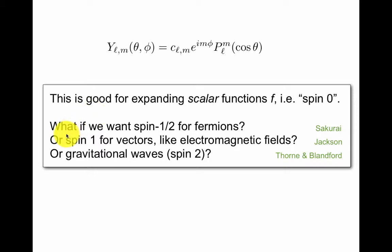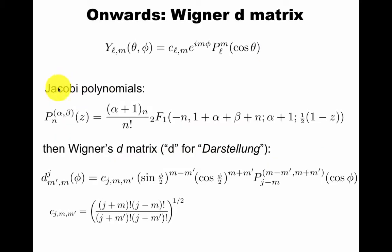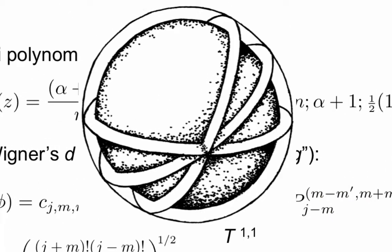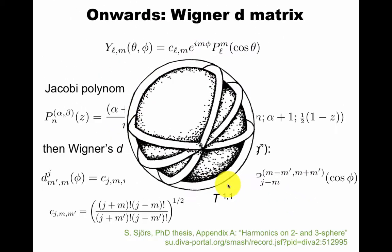This is all well and good for expanding scalar functions, which we call spin zero in physics. But what if we want spin one-half for fermions or vectors? We might want spin one, or gravitational waves for that matter. As for many other things, already Jacobi essentially solved that problem. So the Jacobi polynomials are these special cases of hypergeometric functions. You can use them to build the Wigner's d matrix, where d is for Darstellung, representation in German. So this is very important in representation theory. This is a generalization of spherical harmonics to other spins.